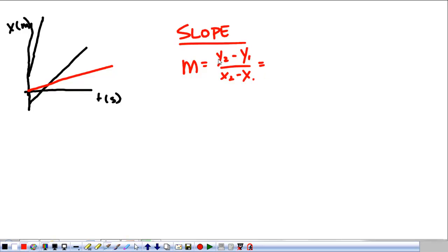Well here, y2 and y1 are actually our position, x2 minus x1 over our times, time 2 minus time 1. That's change in position over change in time. That gives me velocity. So the slope here equals velocity.